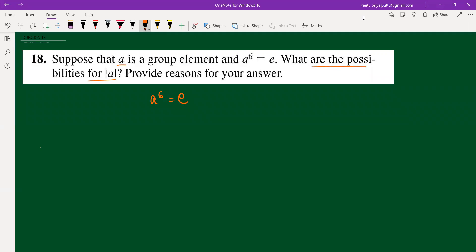We know that A to the power 6 equals identity, and let n be the order of A. Then n is less than or equals to 6. What can be n? n can be 1, 2, 3, 4, 5, and 6.